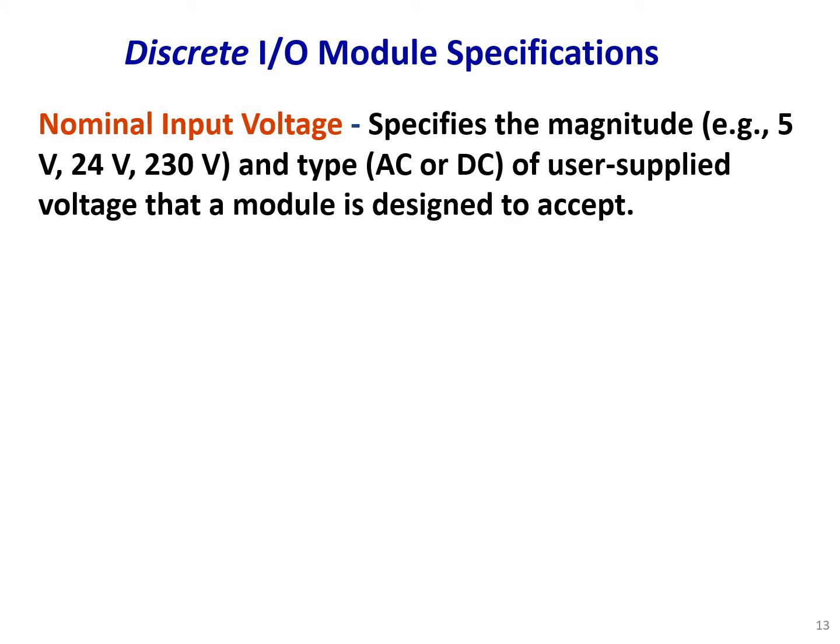I/O specifications — discrete I/O module specification. When we get any type of I/O module, it comes with a spec sheet that lists the specifications, and we want to familiarize ourselves with the most important ones. The first is nominal input voltage, which specifies the magnitude — for example, 5, 24, or 230 volts — and type, AC or DC, of the user supply voltage that a module is designed to accept.